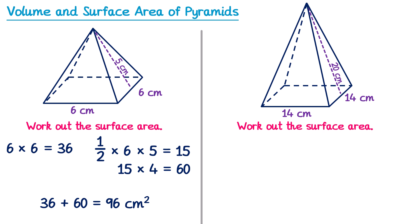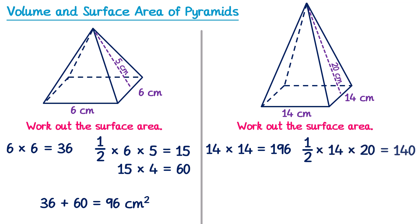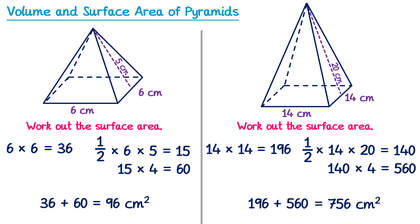For the second pyramid, we start with the square base: 14 times 14 is 196. Then one triangular face: one half multiplied by 14 multiplied by 20 gives 140. There are four of those, so we multiply 140 by 4, giving 560. Adding the square base area, 196, and the four triangles, 560, gives a total of 756 centimetres squared.